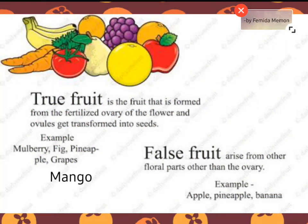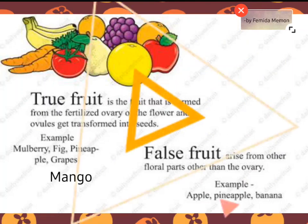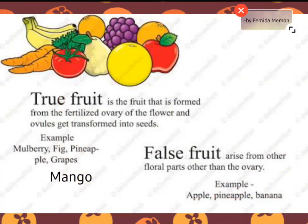There are two types of fruit: true fruit and false fruit. True fruit is the fruit that is formed from the fertilized ovary of the flower, and ovules get transformed into the seeds. Examples: mulberry, fig, pineapple, grapes, mango. False fruit arises from other floral parts than the ovary. Examples: apple, pineapple, and banana.